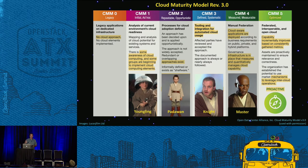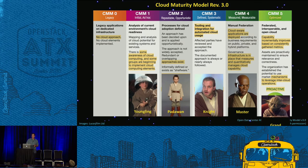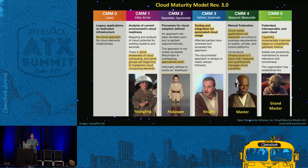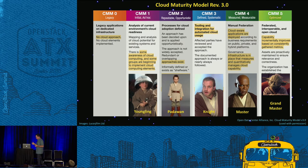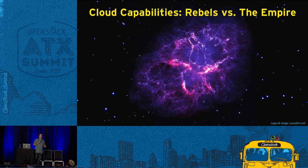At level four you become a Jedi Master — cloud-aware applications, beginning to introduce self-healing capabilities, getting active-active in multiple regions or zones. Level five is Grand Master Yoda — these would be the Netflixes of the world who are intentionally introducing thrash and chaos into their infrastructure, watching and improving automation to keep things optimized. The cool thing about levels four and five is that those people are the ones you hear from on stage, paying it forward by contributing code, sharing lessons, and helping others — that's the great spirit of OpenStack.